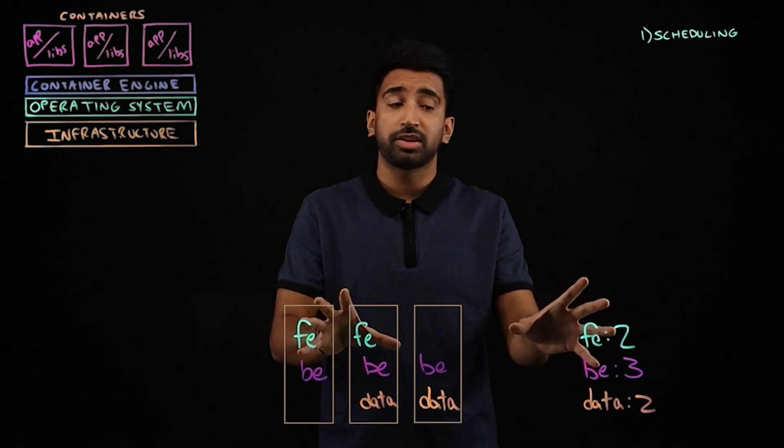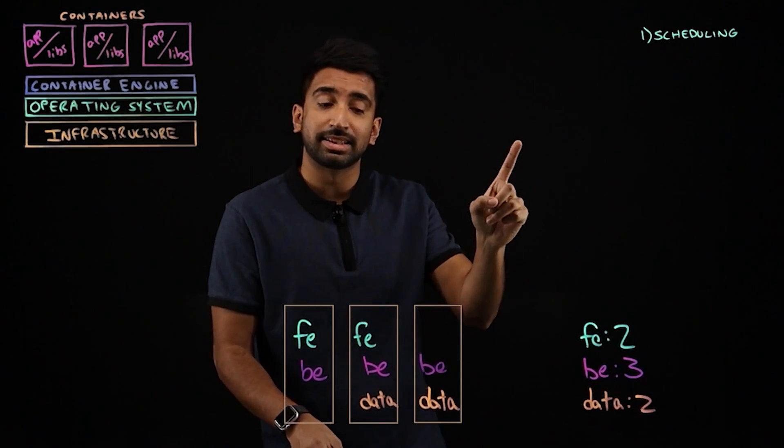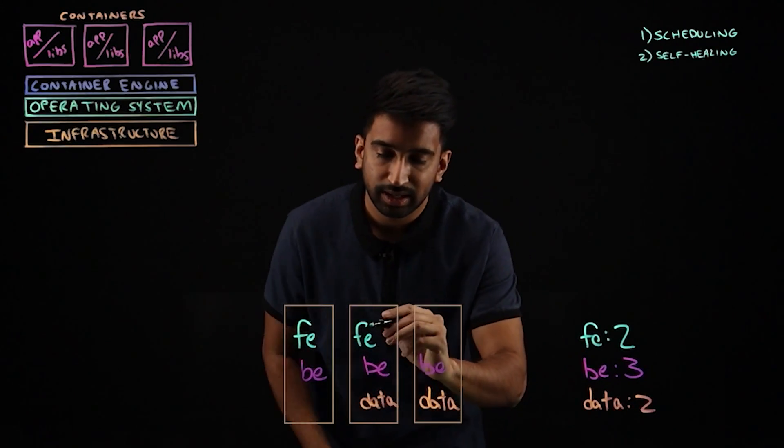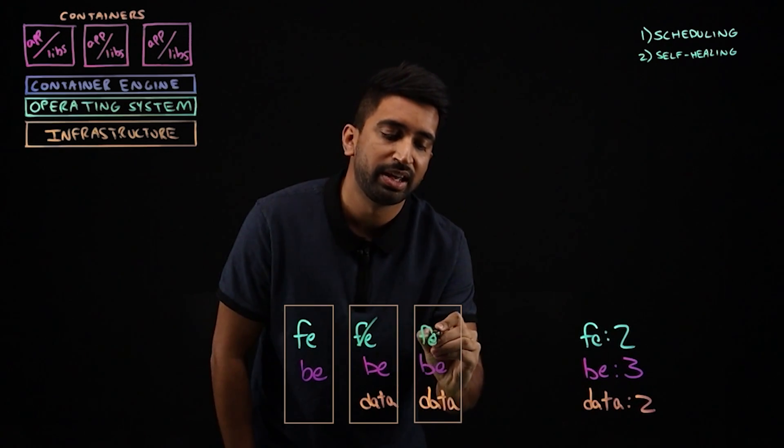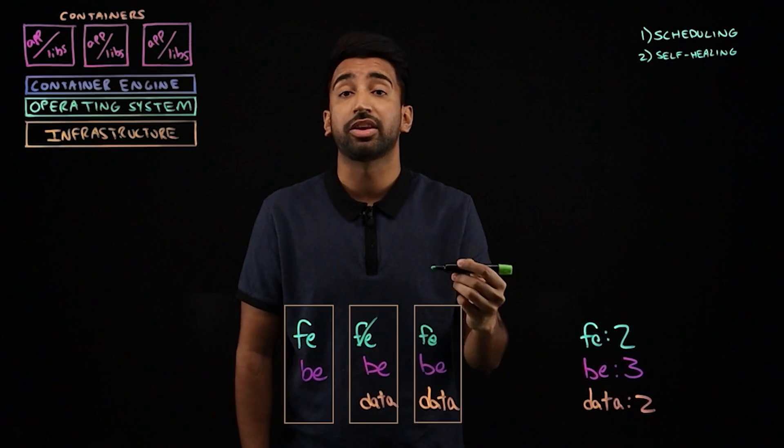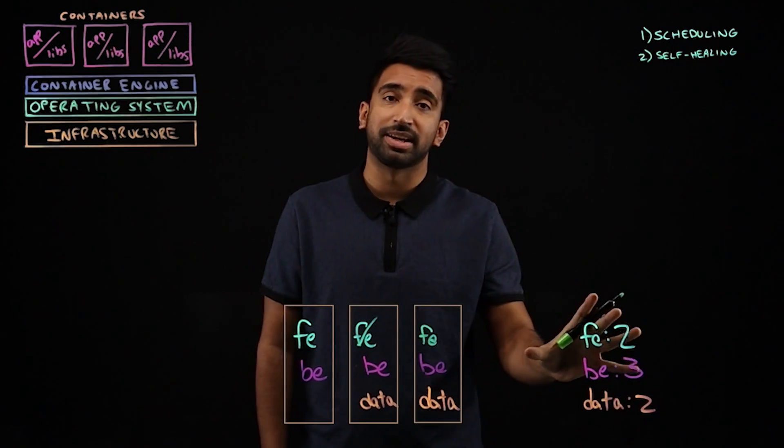So essentially, we've talked about how we maybe deploy this. But one of the cool things about Kubernetes I want to talk about next is that it's self-healing. Let's say the front-end crashes, you know, segment faults, something happens, it goes down. That control loop, always running, kicks in and says, oh, we need another copy of the front-end. And so it'll self-heal and make sure that config is hit.